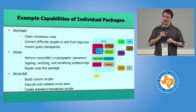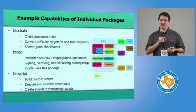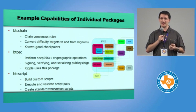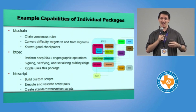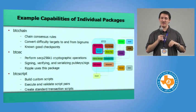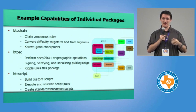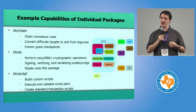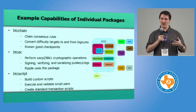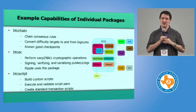The first package is BTCChain. It contains all the core consensus chain rules — for example, when a block shows up, is it extending the main chain, is it a fork, or is it an orphan? It handles all of that. As a service provider, it provides methods to get the difficulty target of a block, convert it to a usable number, and access known good checkpoints to compare blocks against.